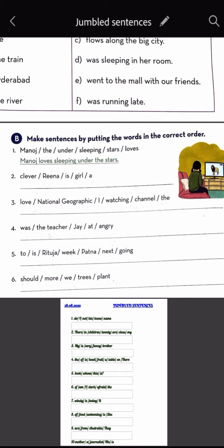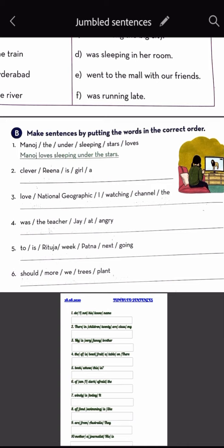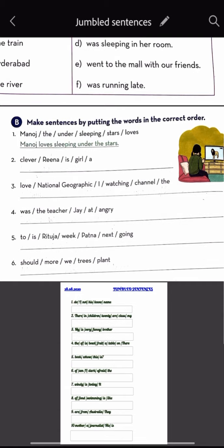Clever, Reena, is, girl, a. Reena is a clever girl. Love, National Geographic, I, watching, channel, the. I love watching the channel National Geographic. Was, the, teacher, Jay, at, angry. The teacher was angry at Jay. Fifth, Rithja, week, Patna, next, going. Rithja is going to Patna next week.